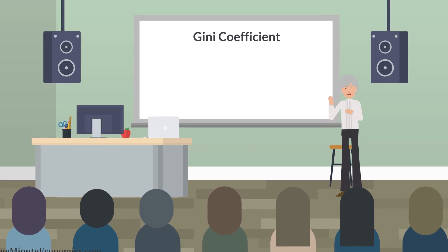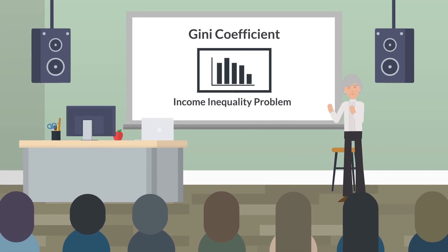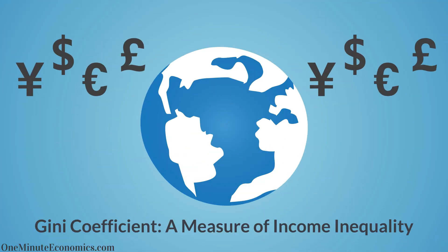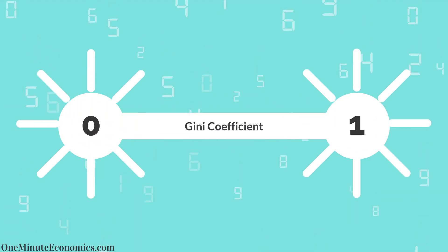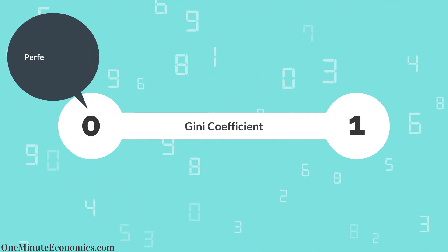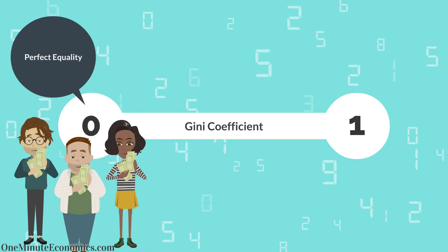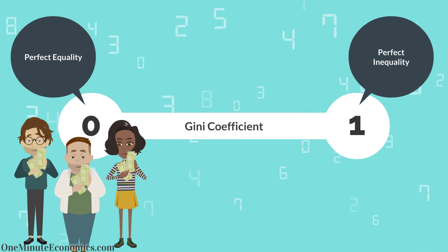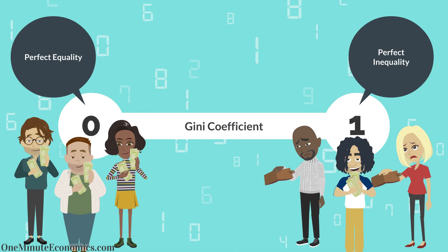The Gini coefficient is an indicator used by economists and policymakers to determine if a country has an income inequality problem. It got its name after Italian statistician Corrado Gini and basically quantifies income inequality within a country. The Gini coefficient is a number between zero and one, with zero representing perfect equality (if literally everyone has the exact same income) and one representing perfect inequality (if one person earns a gazillion dollars and everyone else nothing at all).